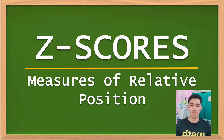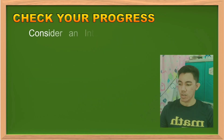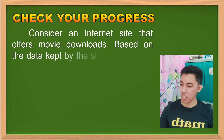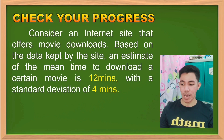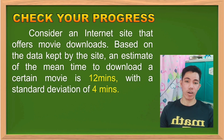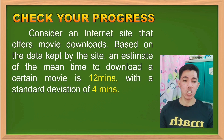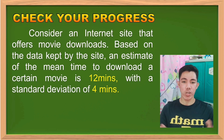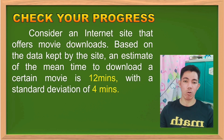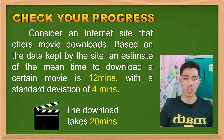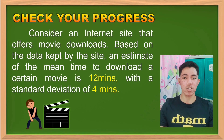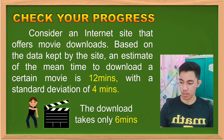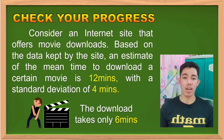So let's have first a given problem. Consider an internet site that offers many downloads. Based on the data kept by the site, an estimated mean time to download a certain movie is 12 minutes, and the standard deviation is 4 minutes. For example, ikaw mismo ay nag-download ng movie in 20 minutes, at meron kang isang friend na nagdownload din ng katulad na movie in only 6 minutes — so yung mean time nila ay hindi natin masyadong na-expect, and that results in unexpected values.